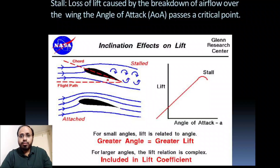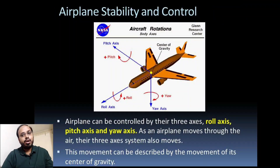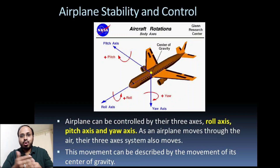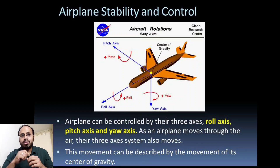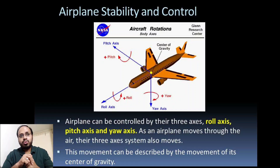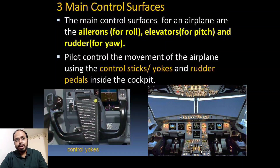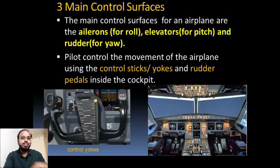Airplane stability and control is a very big topic, but we will discuss only an overview. An airplane can be controlled about three axes: the roll axis, pitch axis, and yaw axis. As the airplane moves through these three axes, the axes system also moves — described by movement about the center of gravity. The three main control surfaces are ailerons, elevator, and rudder. The pilot controls the airplane using the control stick or yoke and rudder pedals inside the cockpit.